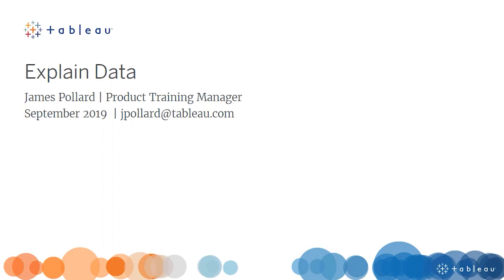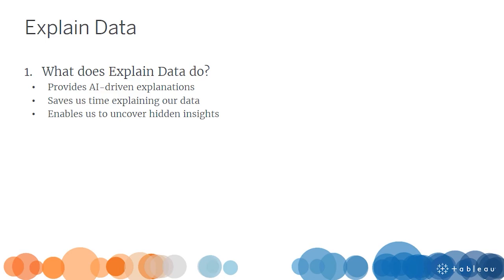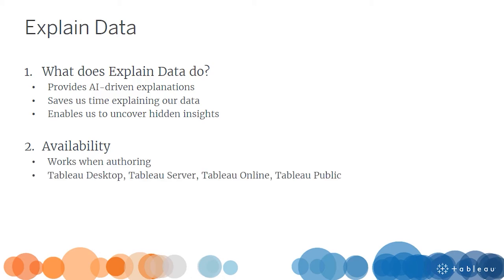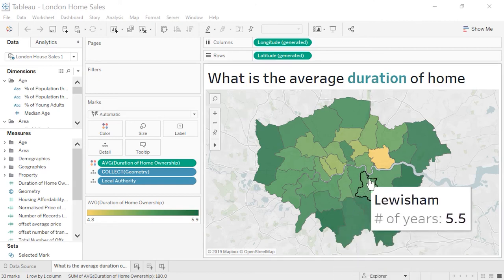Welcome to this video on Explain Data. Explain Data automatically provides AI-driven explanations for the value of a data point with a single click. Based on advanced statistical models, explanations are relevant and integrated, saving us time and enabling us to uncover insights we may not have found otherwise. Explain Data works when authoring in Tableau Desktop, Tableau Server, Tableau Online, and Tableau Public, and is available to users with creator and explorer access. Our workbook contains data on London house sales. The viz displays the average duration of home ownership broken down by borough. Most boroughs have an average home ownership duration greater than 5 years. However, the borough of Newham is an outlier with an average home ownership duration of only 4.8 years.